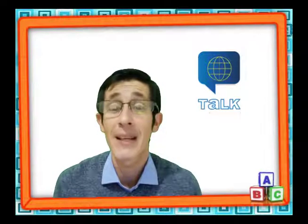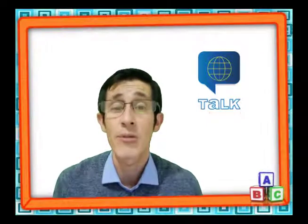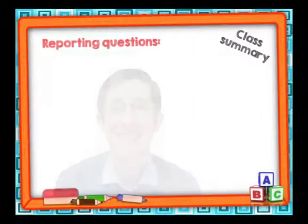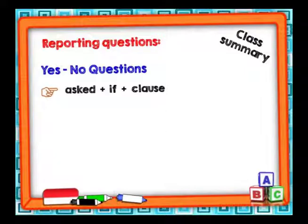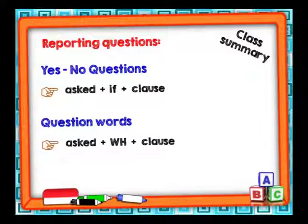Esperamos que la clase del día de hoy les haya gustado. Vamos a ver el resumen de hoy. Para reportar yes/no questions usamos: ask + if + cláusula. Para reportar question words usamos: ask + la palabra WH + cláusula. Lo único que cambia es reemplazar el 'if' por la palabra WH. Recuerden siempre terminar con una cláusula, no con una pregunta.